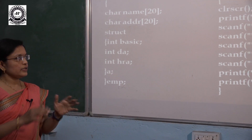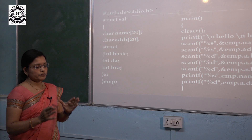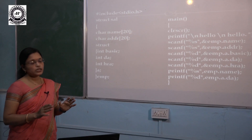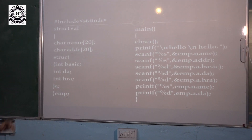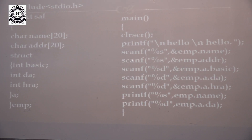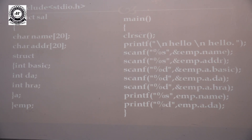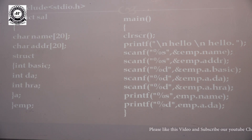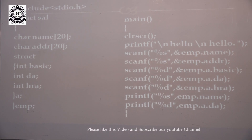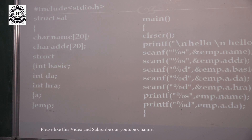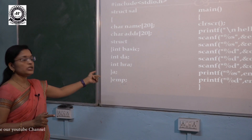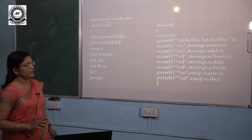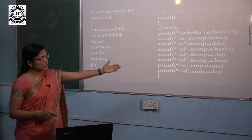We can see the complete program for this structure. A structure should always be defined at the top of the main function. We can see the definition of a structure with different members: the first member is name, the second is address, and the third is another nested structure inside the main structure. This nested structure contains three types of allowances — basic, DA, and HRA. The nested structure variable is A and the main structure variable is EMP.